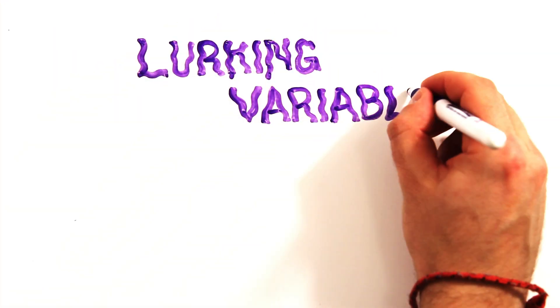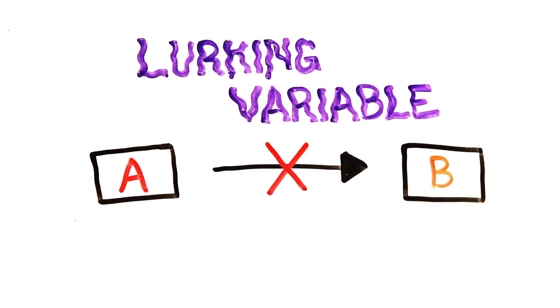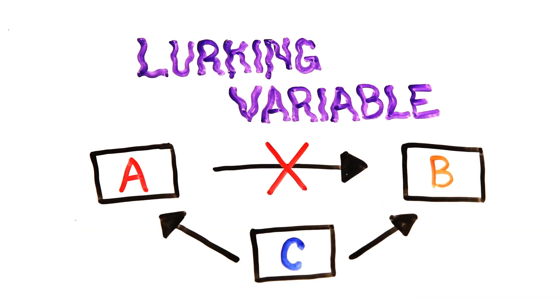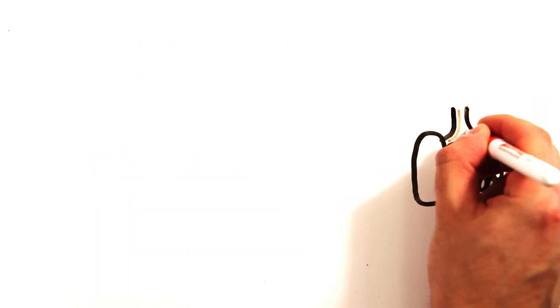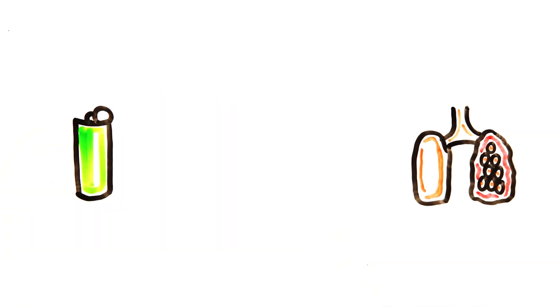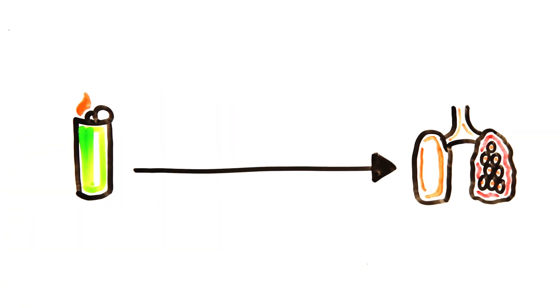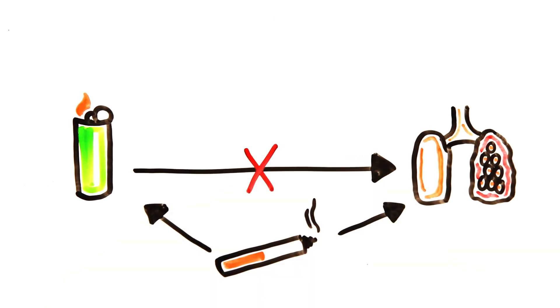These are examples of a lurking variable where A does not cause B, but rather C causes them both. It's a little like taking people who have lung cancer and thinking, hey, they're all carrying lighters in their pockets, so lighters must cause cancer, while not realizing that smoking is the confounding variable.